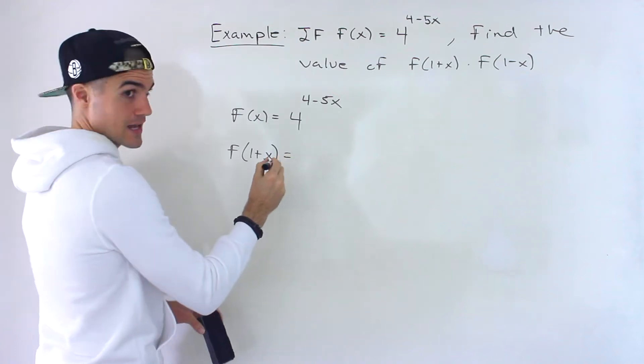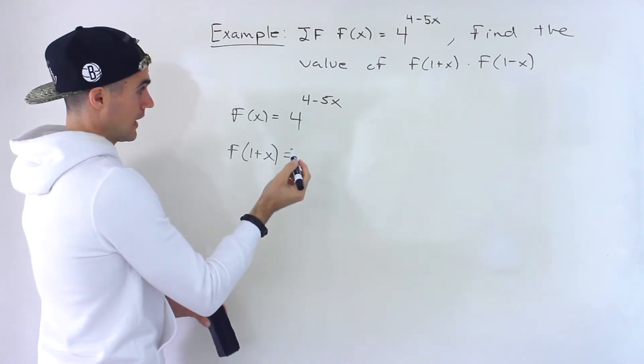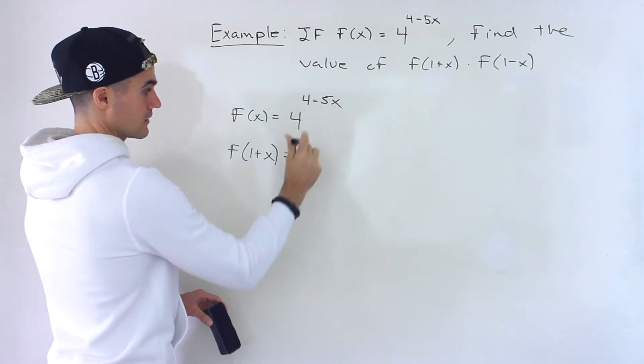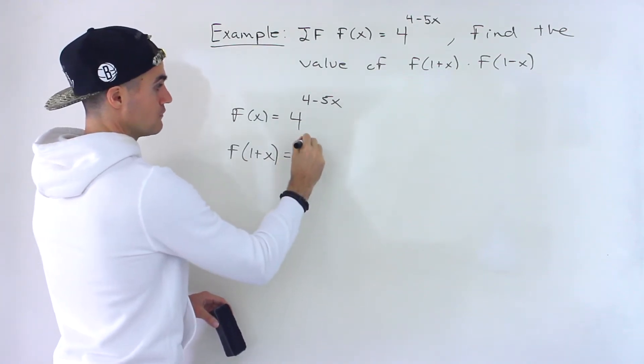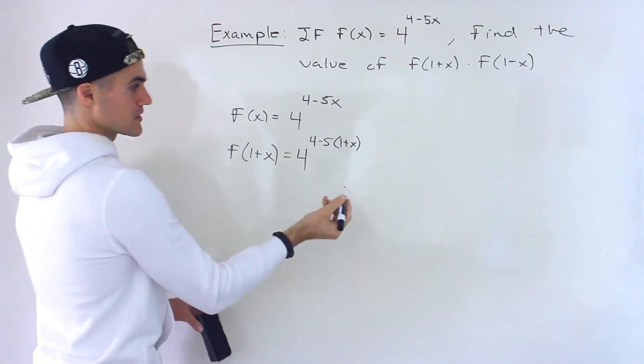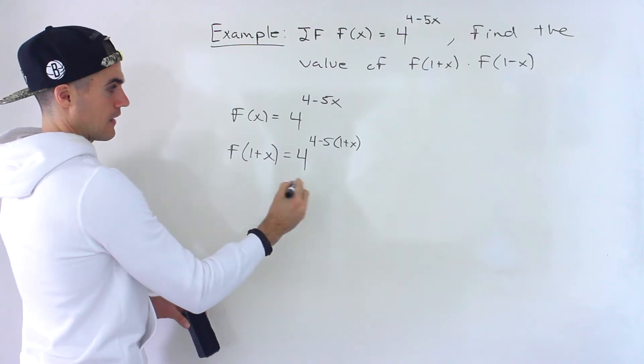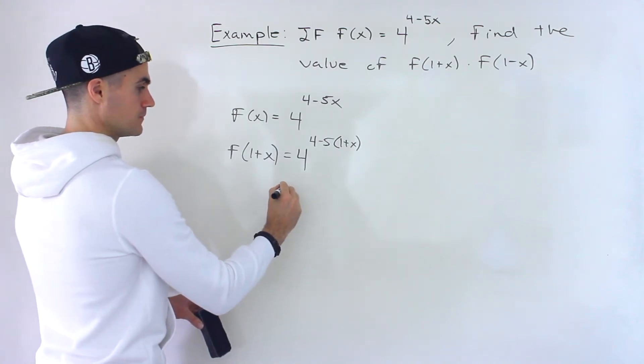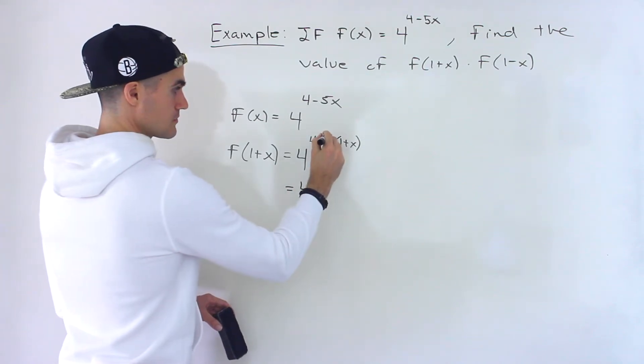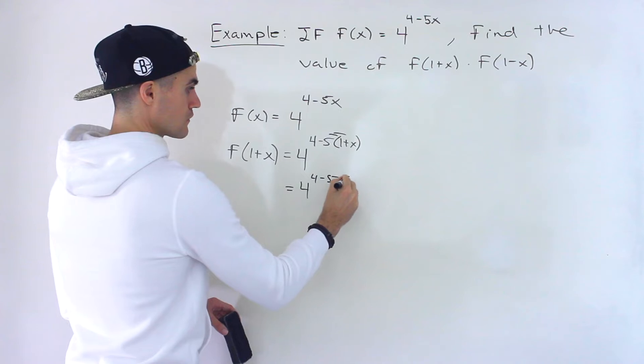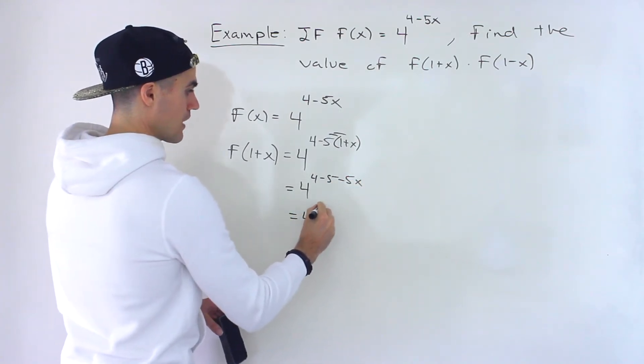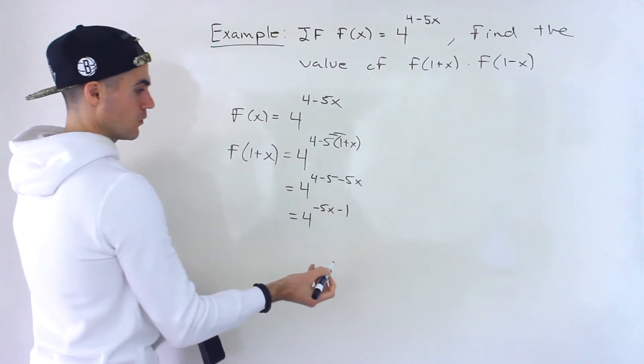So f of 1 plus x, what we're going to do is take this and plug it in for the x value. So we have 4 to the power of 4 minus 5, bracket 1 plus x. And then what's going to happen here is we'd have 4 to the power of 4. We could simplify, so distribute the negative 5 inside the bracket, and we'd end up with negative 5x, 4 minus 5 is minus 1.